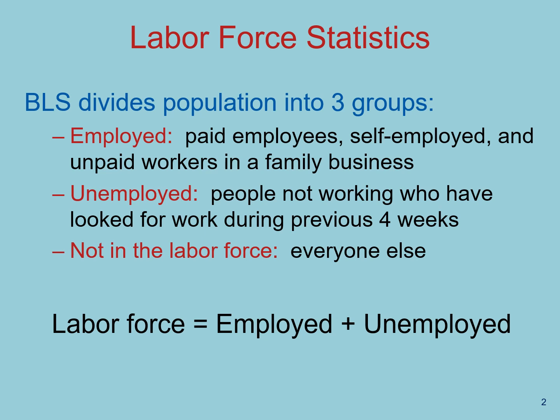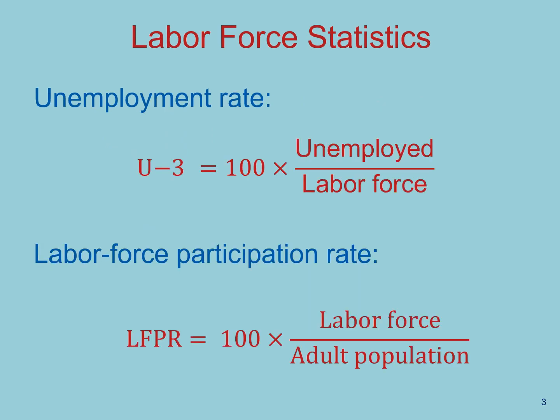The labor force is equal to the people that are employed plus those that are unemployed. The unemployment rate, or U3, is equal to the ratio of the people that are currently unemployed divided by the labor force, times 100. Similarly, the labor force participation rate is the ratio of the labor force to the adult population, times 100.